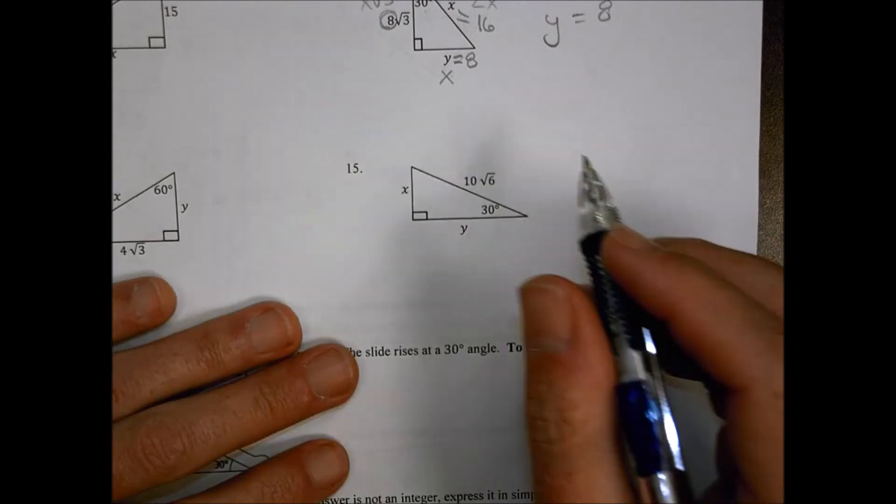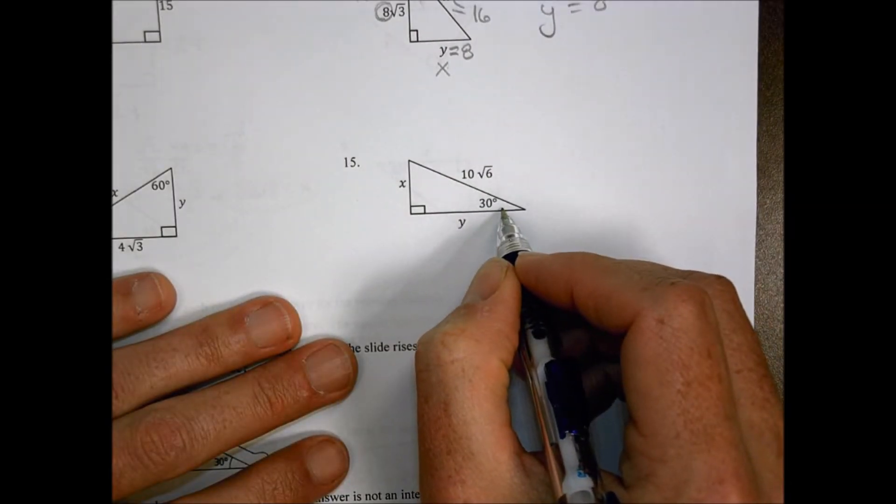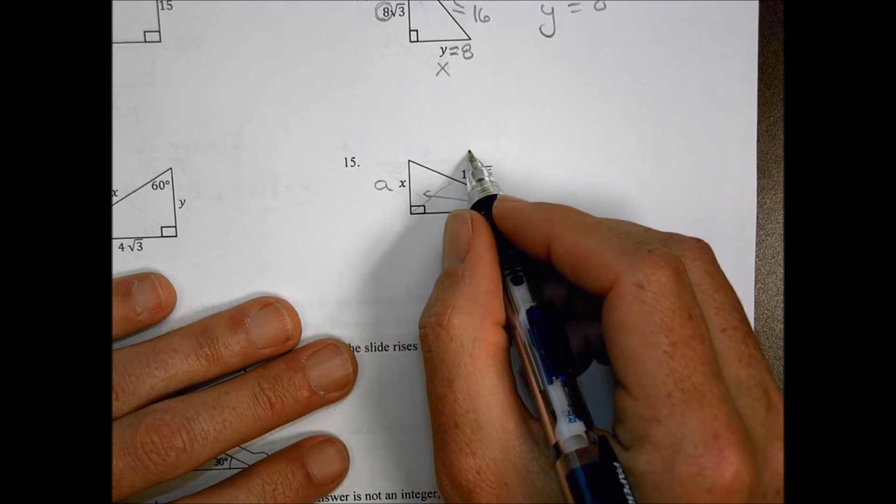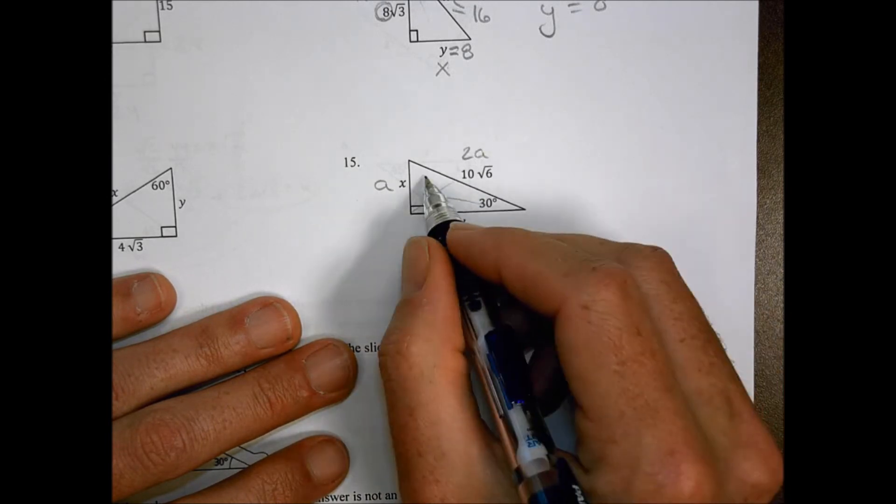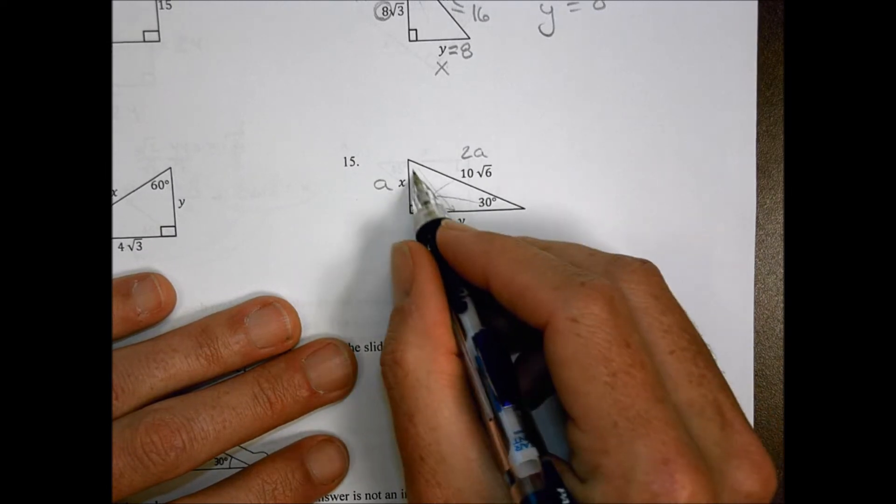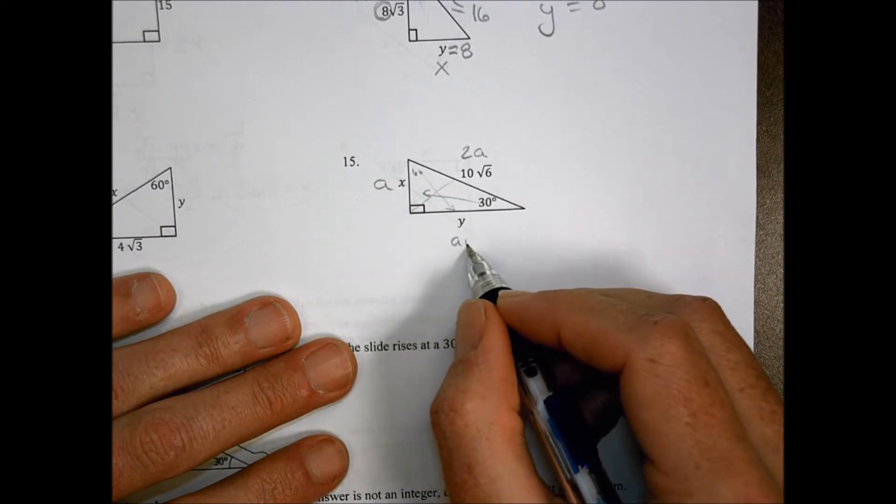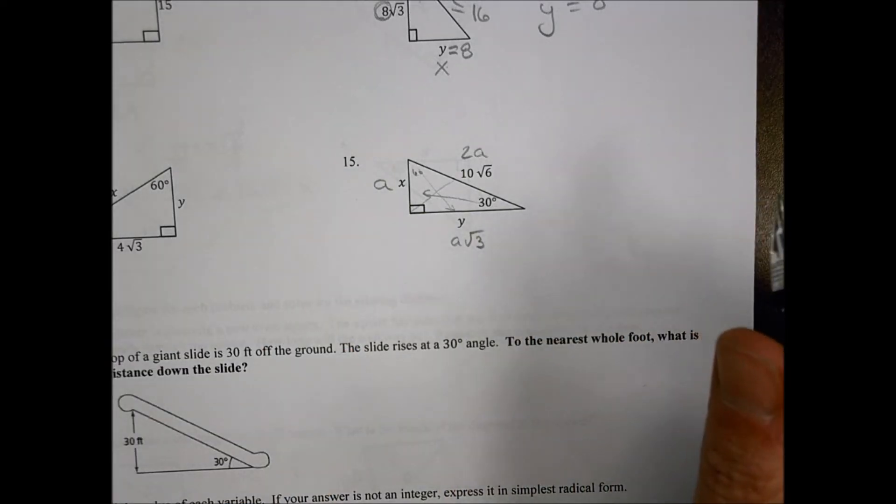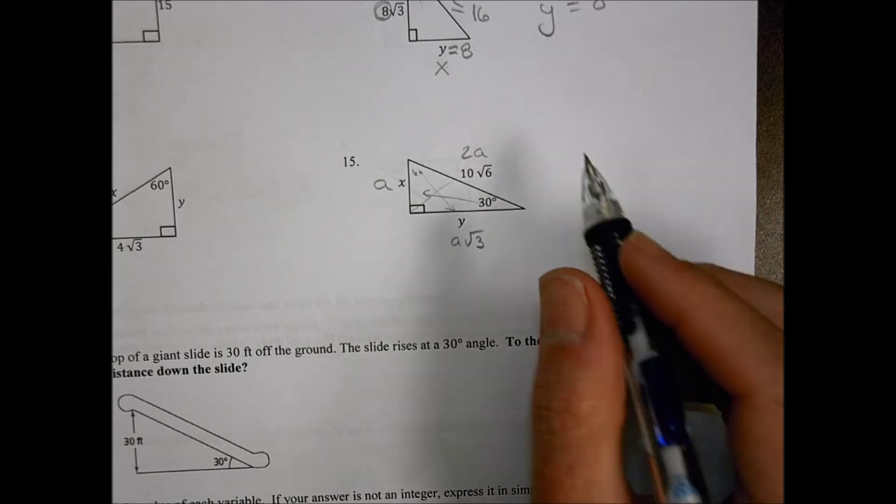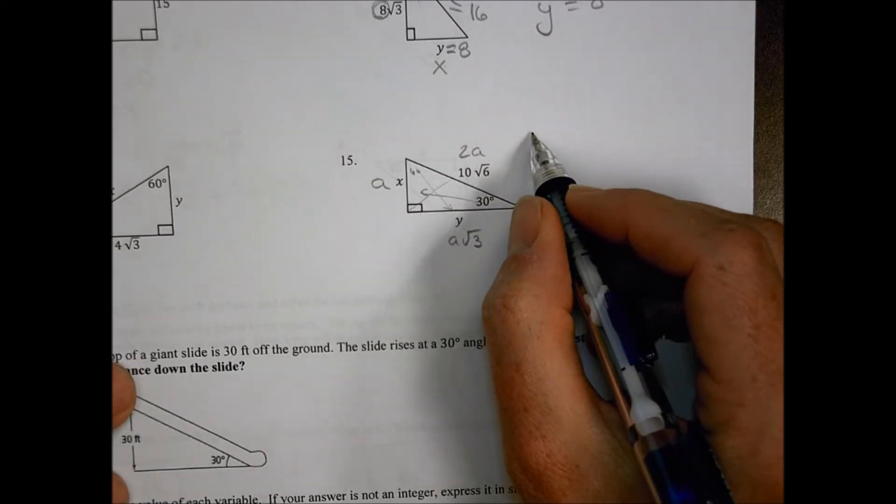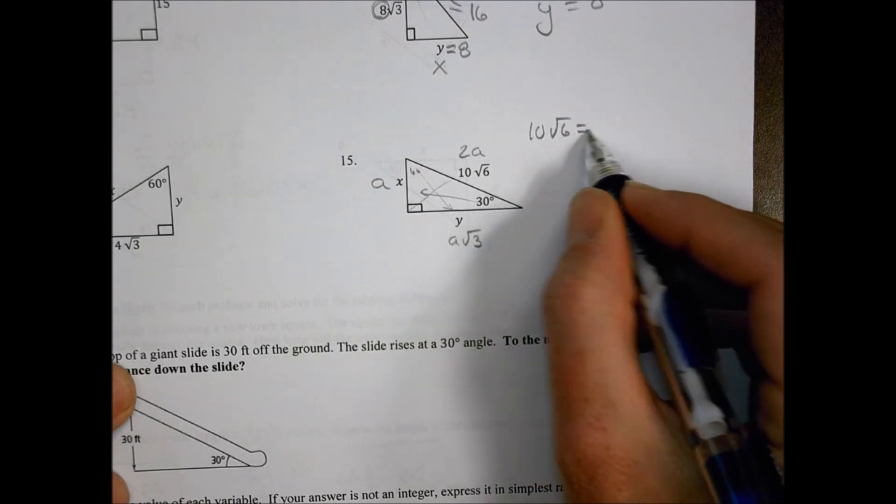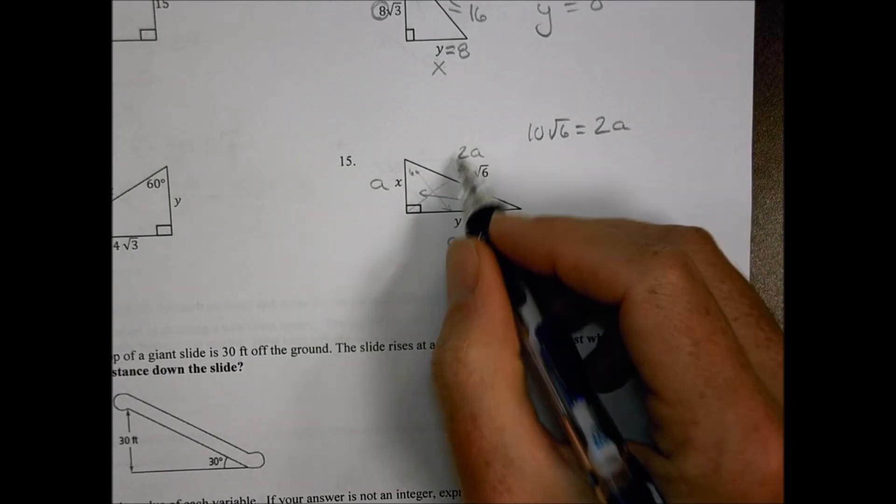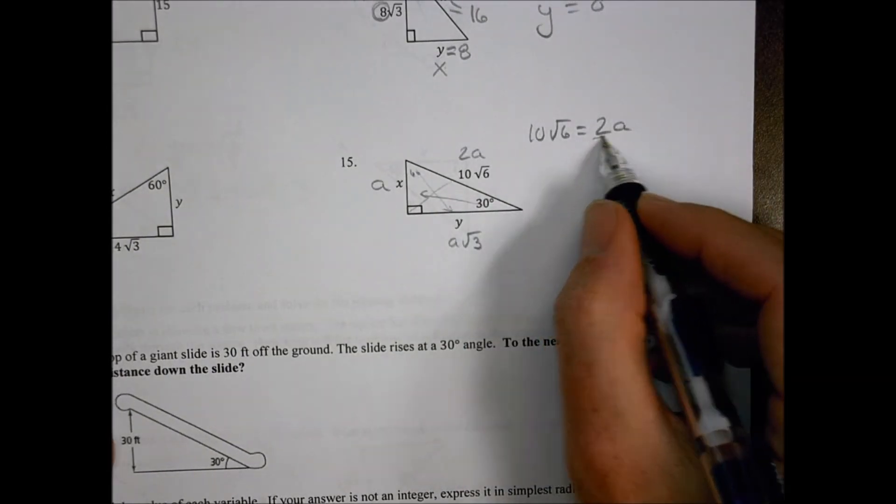Number 15. We'll call the one across from the 30 our A. The one across from the hypotenuse, our 2A. And the one across from the 60 degrees here is going to be our A root 3. So now we have a little bit of a situation to figure this out. This A, or this one here, think about it this way. 10 root 6 is equal to 2 times A. We can set that equal to what we know our setup should be. So if I divide both sides by 2, I can find out what A is going to be.